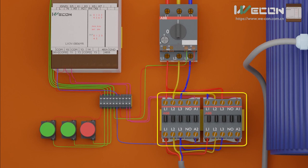Moving forward, we have two contactors which will be used to provide power to the motor. The forward contactor is connected at the Y0 output of the PLC, and the reverse contactor is connected at the Y1 output of the PLC.